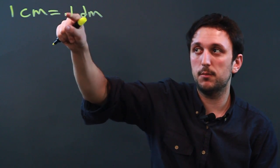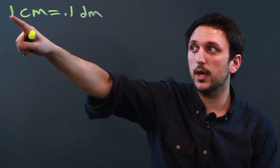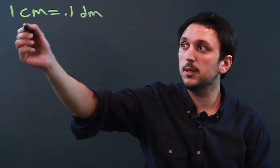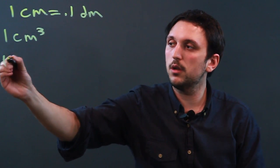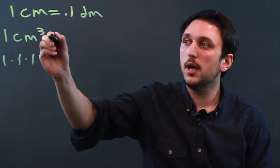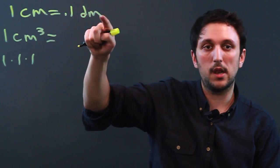So if you take one-tenth and multiply by one-tenth, you get one-one-hundredth. Now, a centimeter cubed, 1 cm cubed, is like saying 1 times 1 times 1, and if we do that on this side, we have to do that on this side.